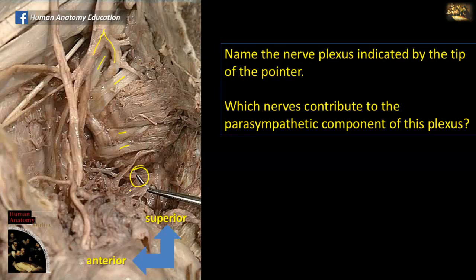The branches from the inferior hypogastric plexus will be distributed to the viscera of the pelvis by accompanying the branches of the internal iliac artery.